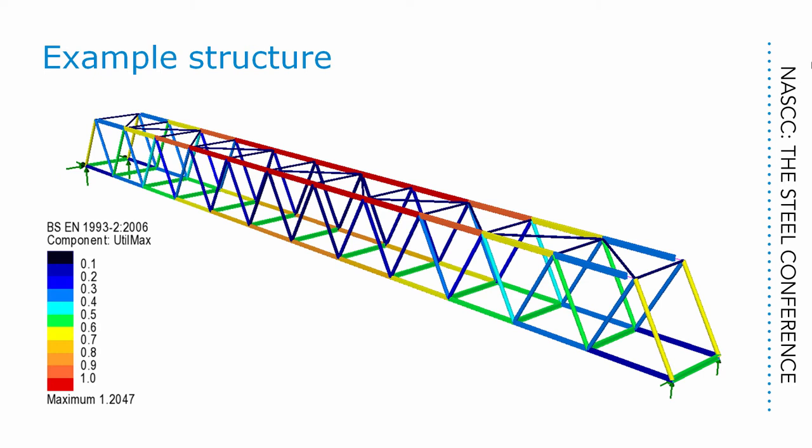Tension, compression, flexure, shear, and all the interaction formulae. It can display the maximum utilization as contours across the structure, like this, where a utilization of less than one is okay, and a utilization of more than one is over 100% utilized — so not okay.